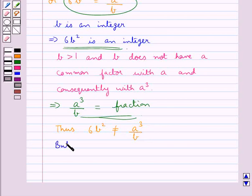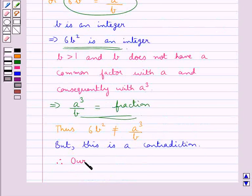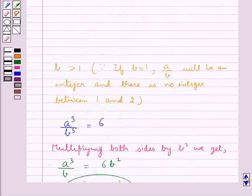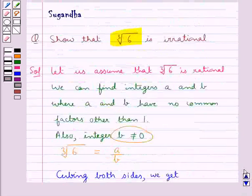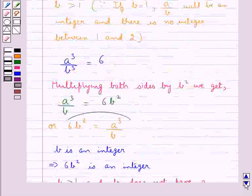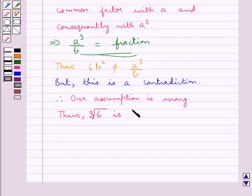But this is a contradiction, as we had that 6b squared is equal to a cube upon b — yet 6b squared is an integer and a cube upon b is a fraction, so 6b squared cannot equal a cube upon b. Therefore our assumption is wrong, and thus we have that cube root 6 is irrational.